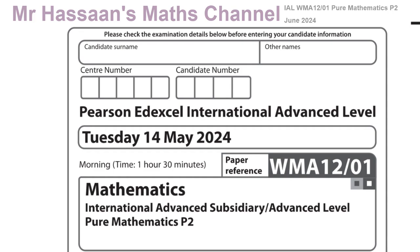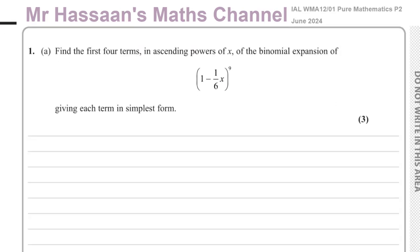It might take a bit longer than you might want, but I'm doing this for my own particular reasons so please keep that in mind. Question number one is about binomial expansion. It says: find the first four terms in the ascending powers of x of the binomial expansion of (1 minus one-sixth x) all to the power of 9, giving each term in its simplest form.